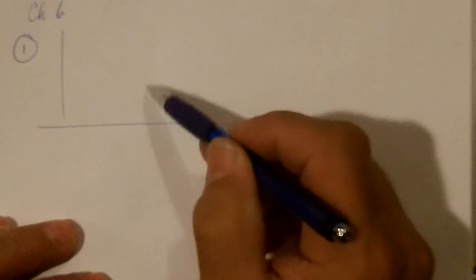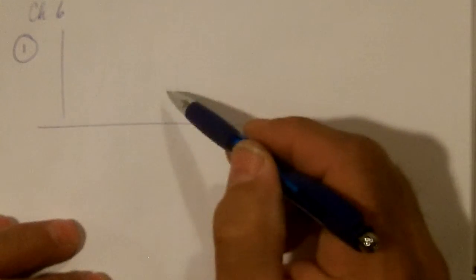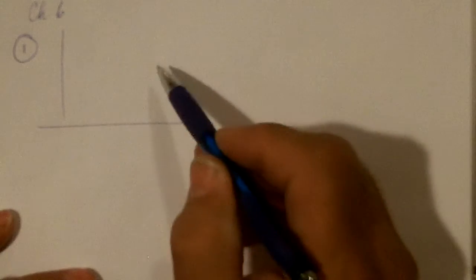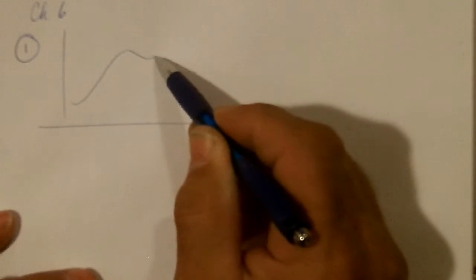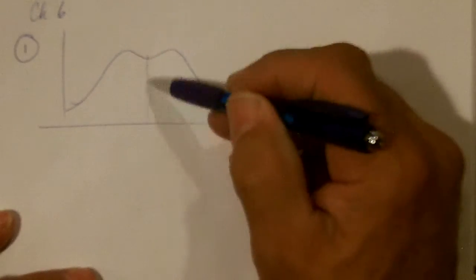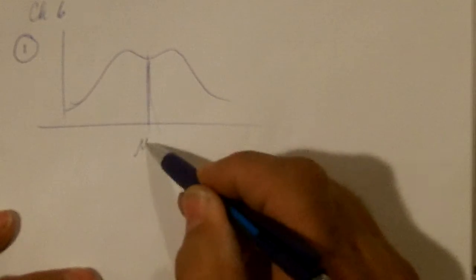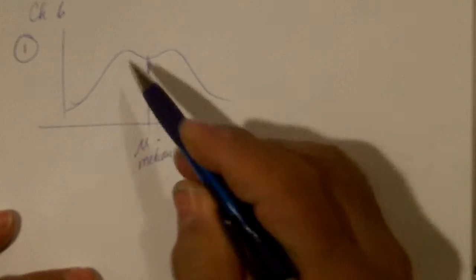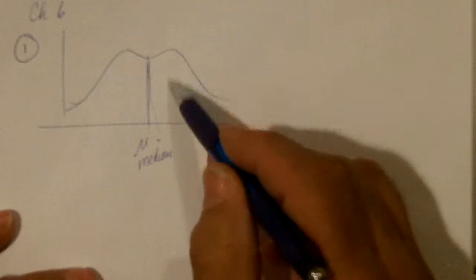So bimodal means there's two places that are real common, high frequency, and if it's symmetric, the mean would have to be in the middle of these two humps. It looks the same on the left as the right, and the mean would be right in the middle, and so would the median if it's symmetric, and would have two modes. The most common would be in this area and in this area, so it's bimodal.